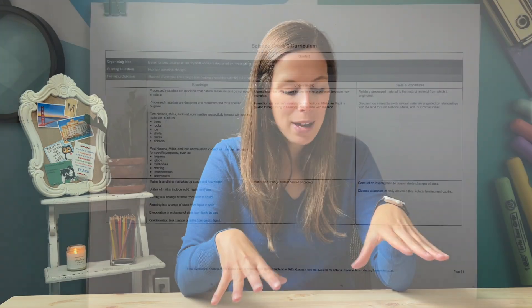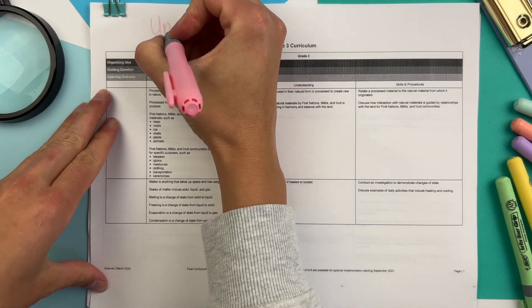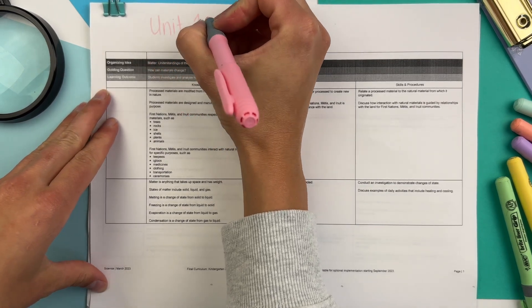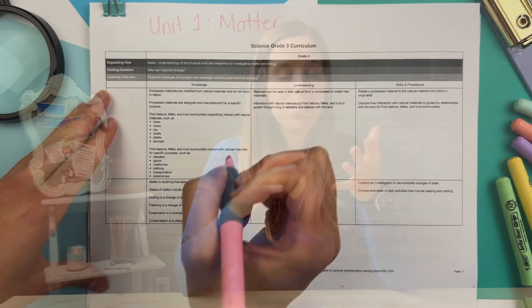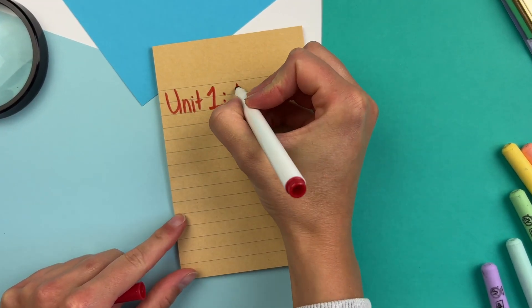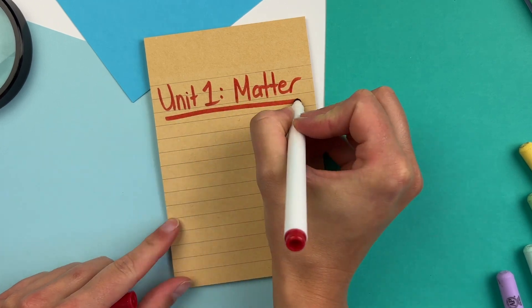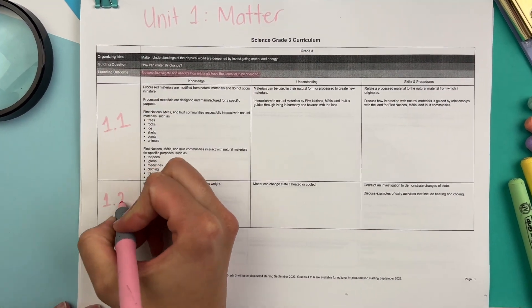The very first unit in grade three science is about matter. Specifically, students need to understand that materials have the potential to be changed. We're talking about states of matter — solids, liquids, and gases — and we're talking about natural materials and how they can be changed and turned into processed materials, including how First Nations people processed natural materials to fit their needs.